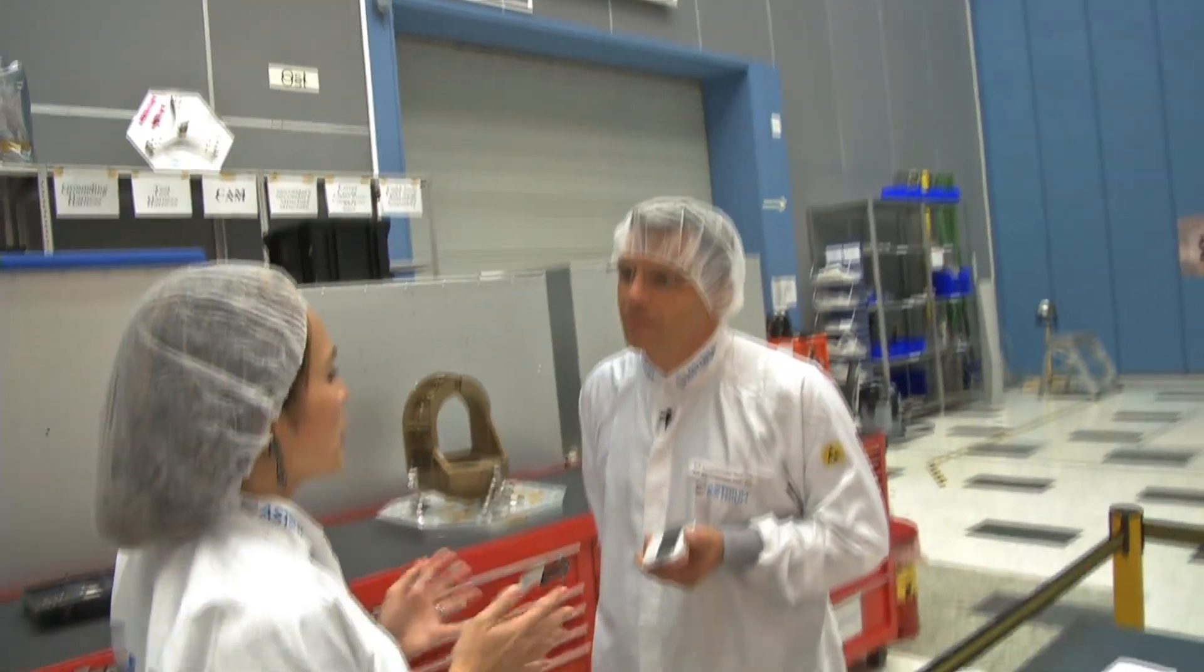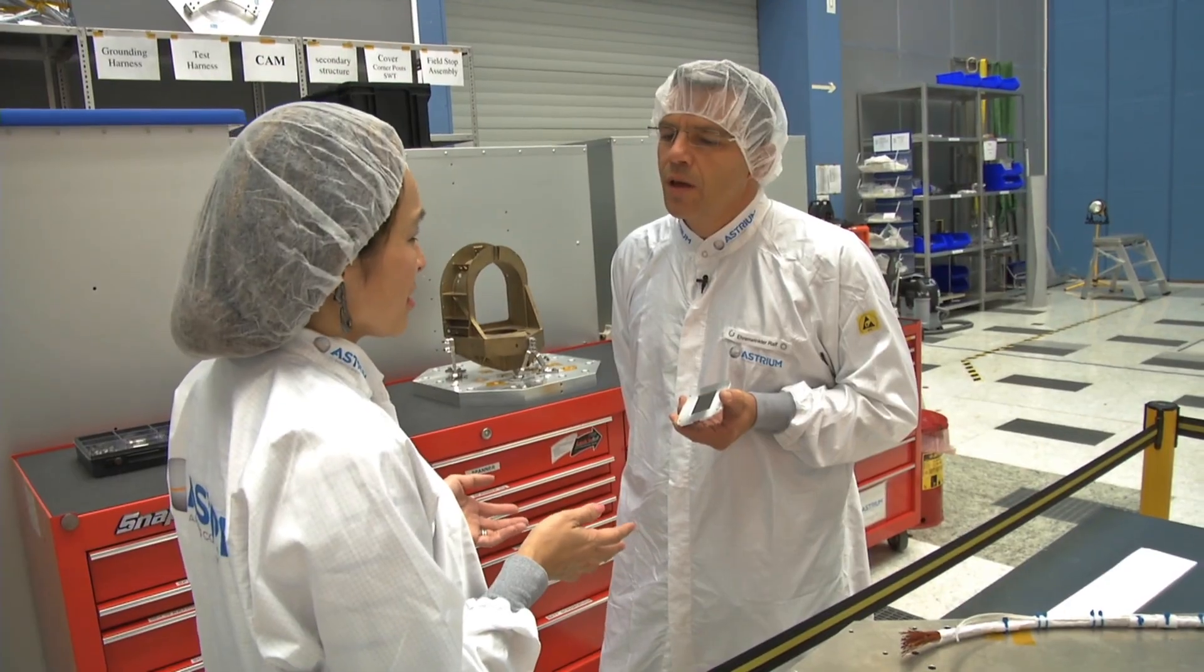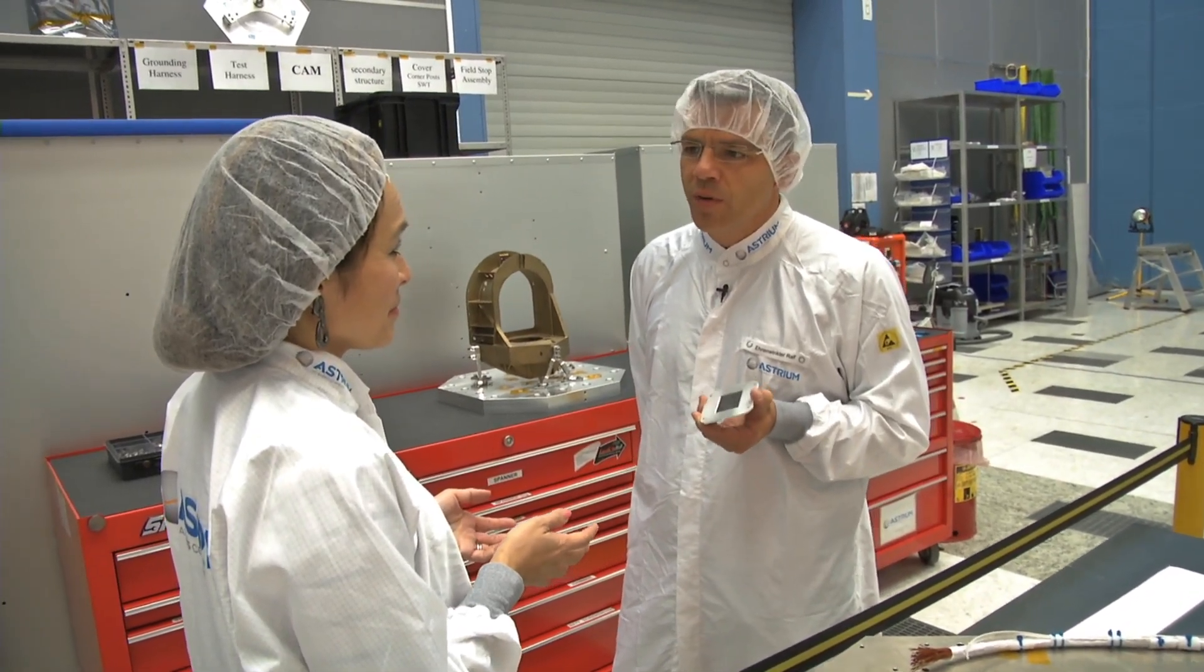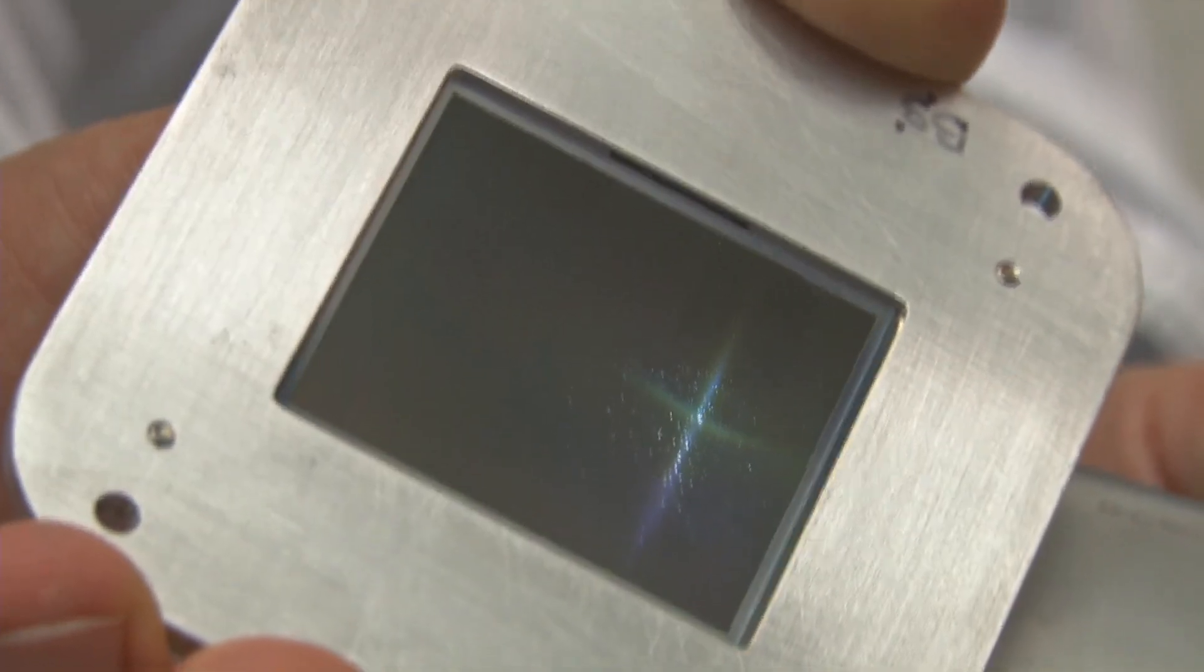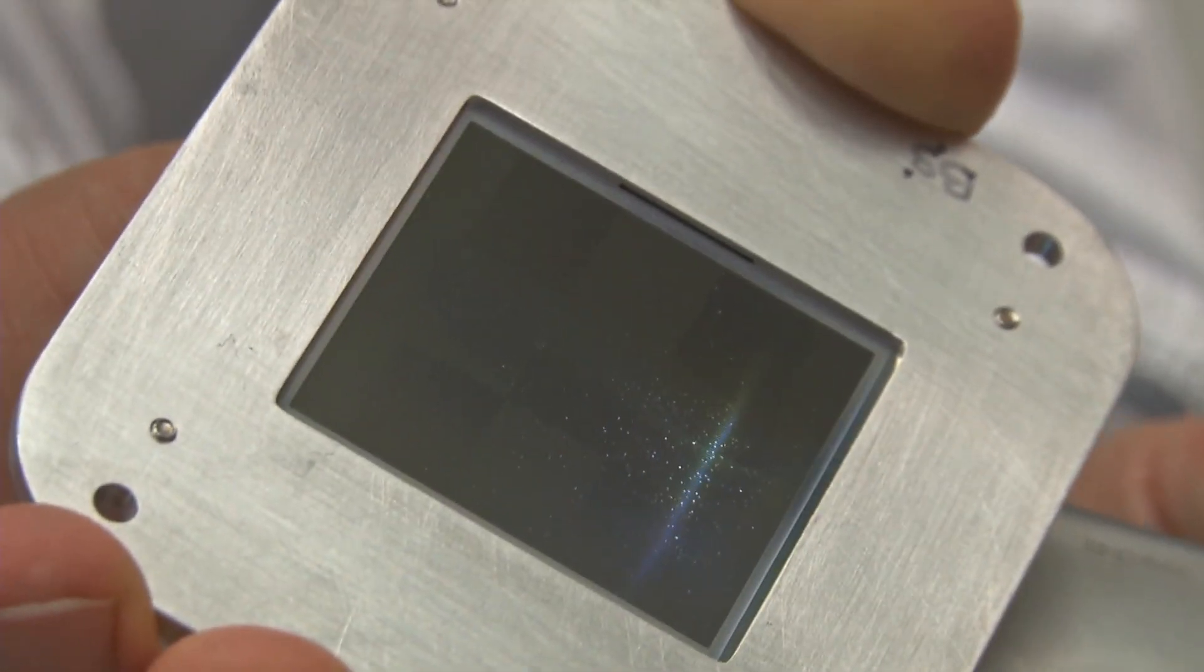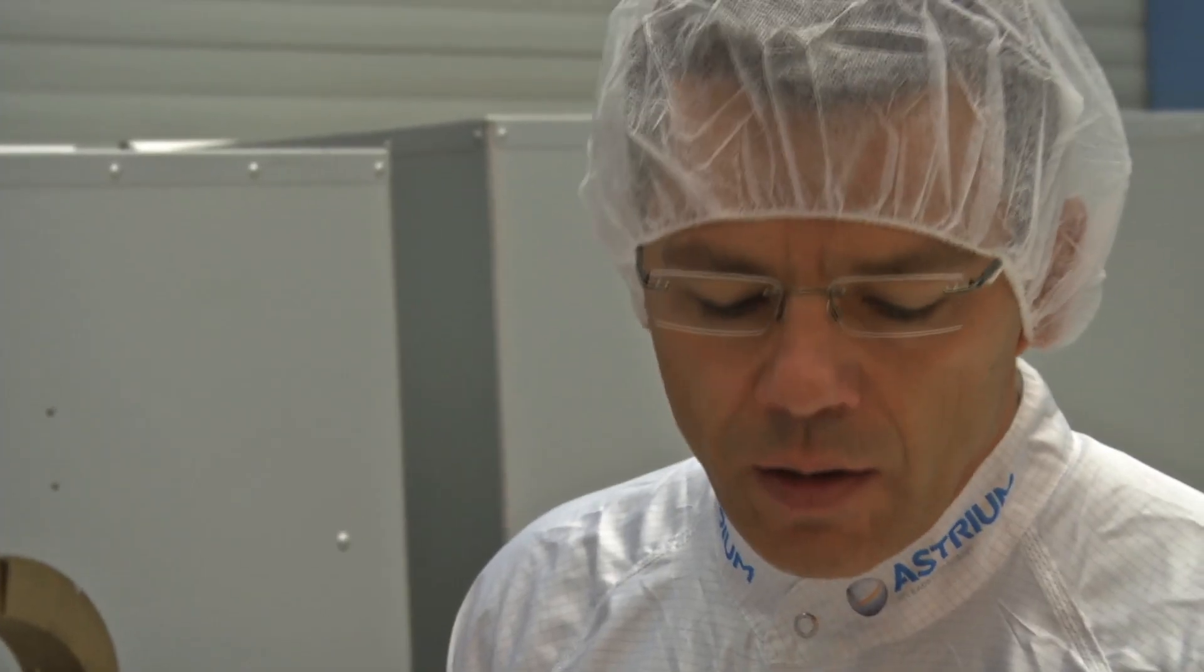So Rolf, does NIRSPEC involve the opening of doors? That's correct, but our doors are very small. If you have a look here, you see thousands of doors in this array. It's called micro-shutter. And if the doors are open, you can have a look to the universe.